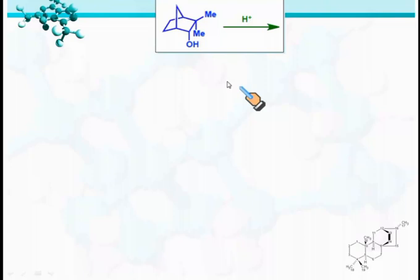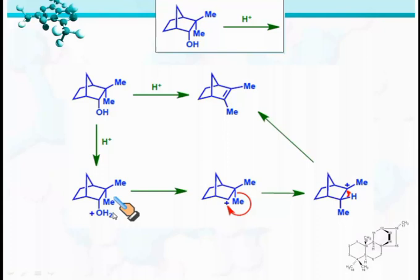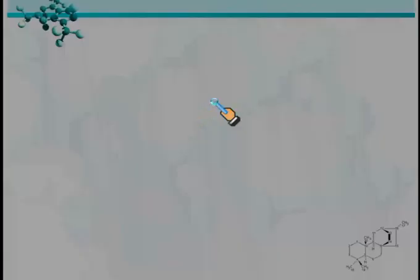When this compound is treated with acid, it forms this alkene. The reaction mechanism is: first, the OH group undergoes protonation and forms a compound which on loss of water forms a carbocation. Then the methyl group migrates to the electron-deficient carbon, generating a relatively more stable tertiary carbocation. Then loss of a proton forms this alkene.